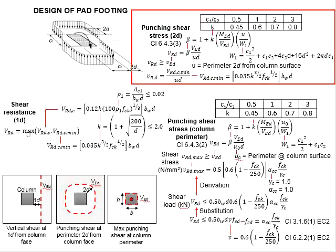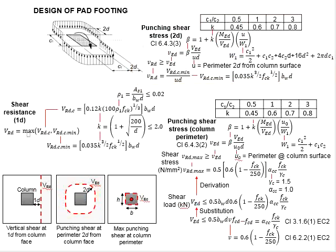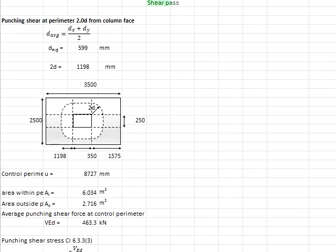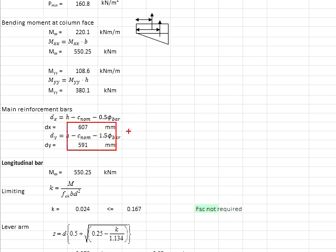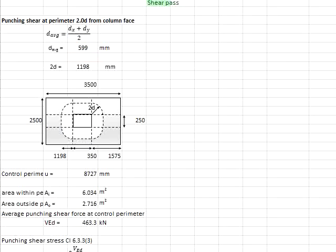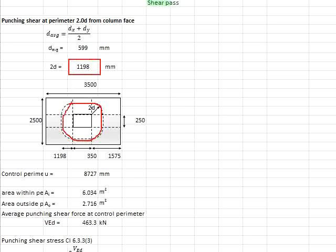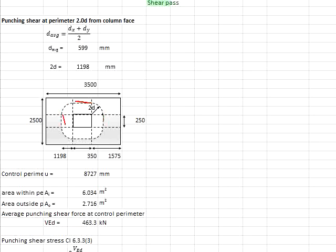Next, check the punching shear stress at the perimeter of 2d from the surface of the column. Use these formulas to calculate the results. First, determine the average d, which is the average of dx and dy — it is found to be 599 mm. Therefore 2d equals 1198 mm. We are now looking at the parameters at an offset of 1198 mm from the column face. The perimeter length u is determined by the perimeter of the column plus the perimeter of a circle with radius 2d, giving 8727 mm.